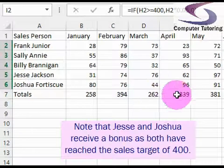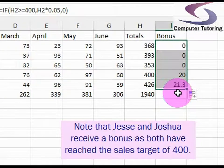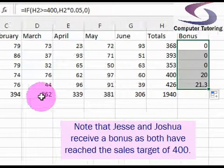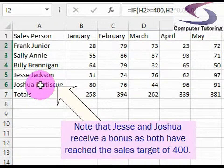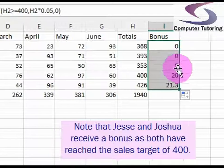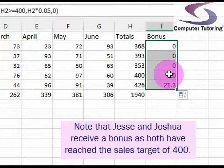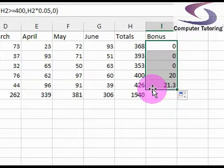Because there's nobody called totals. That's just, obviously, totals. And they will always hit their bonus. So in this case here, you can see that two people, Jesse Jackson and Joshua Fortescue, they both reached their bonus. And one of them gets 20, one of them gets 20.43.